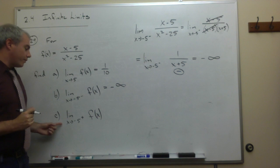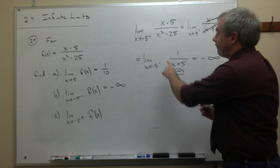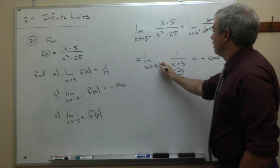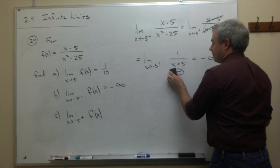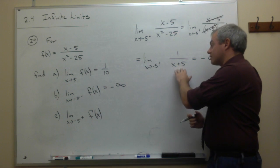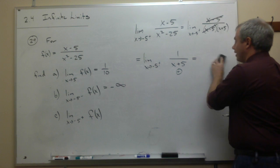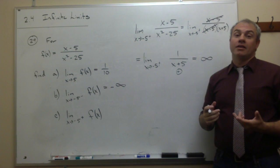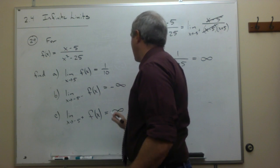For part C, we look at the same limit but from the right-hand side. We take a number slightly bigger than negative 5, like negative 4.9. Negative 4.9 plus 5 is a positive number, and 1 divided by a positive number is positive. So the limit from the right is positive infinity.